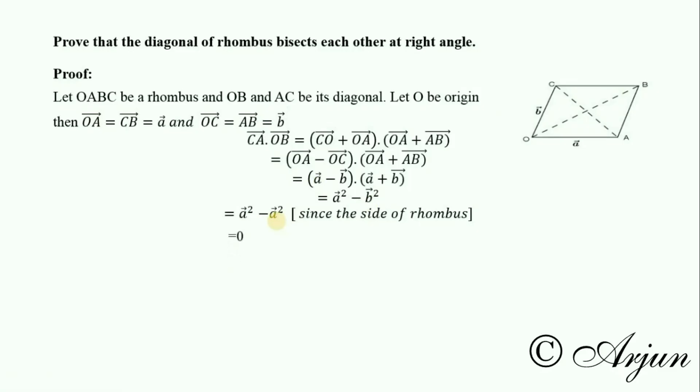A squared minus A squared equals zero. The dot product of the diagonals of the rhombus is zero, so the diagonals are perpendicular to each other.